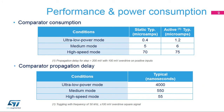The on-chip comparator configuration capability allows the user to select the best performance point for the targeted application. It replaces the external standalone comparator, thereby reducing the bill of materials.